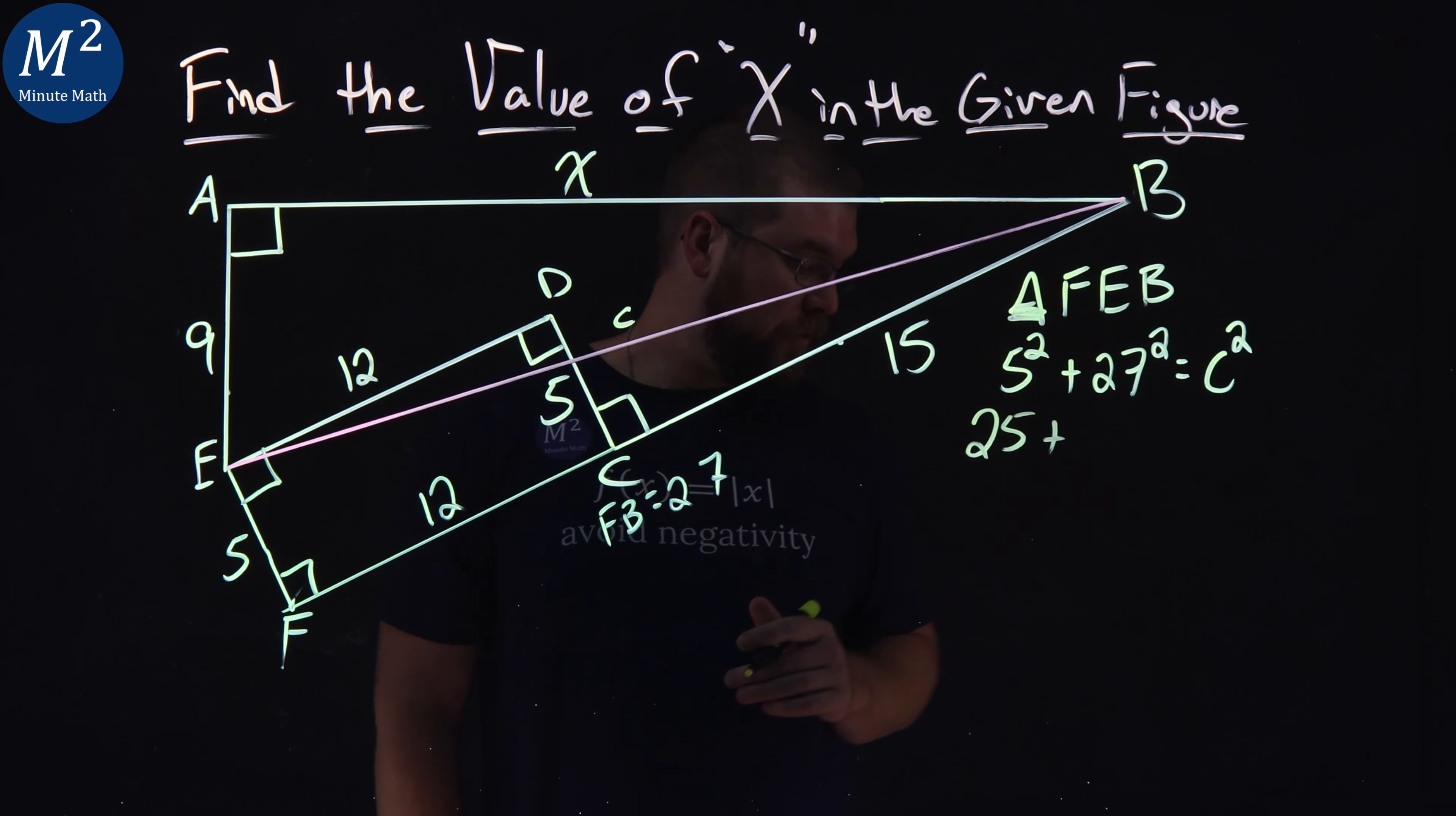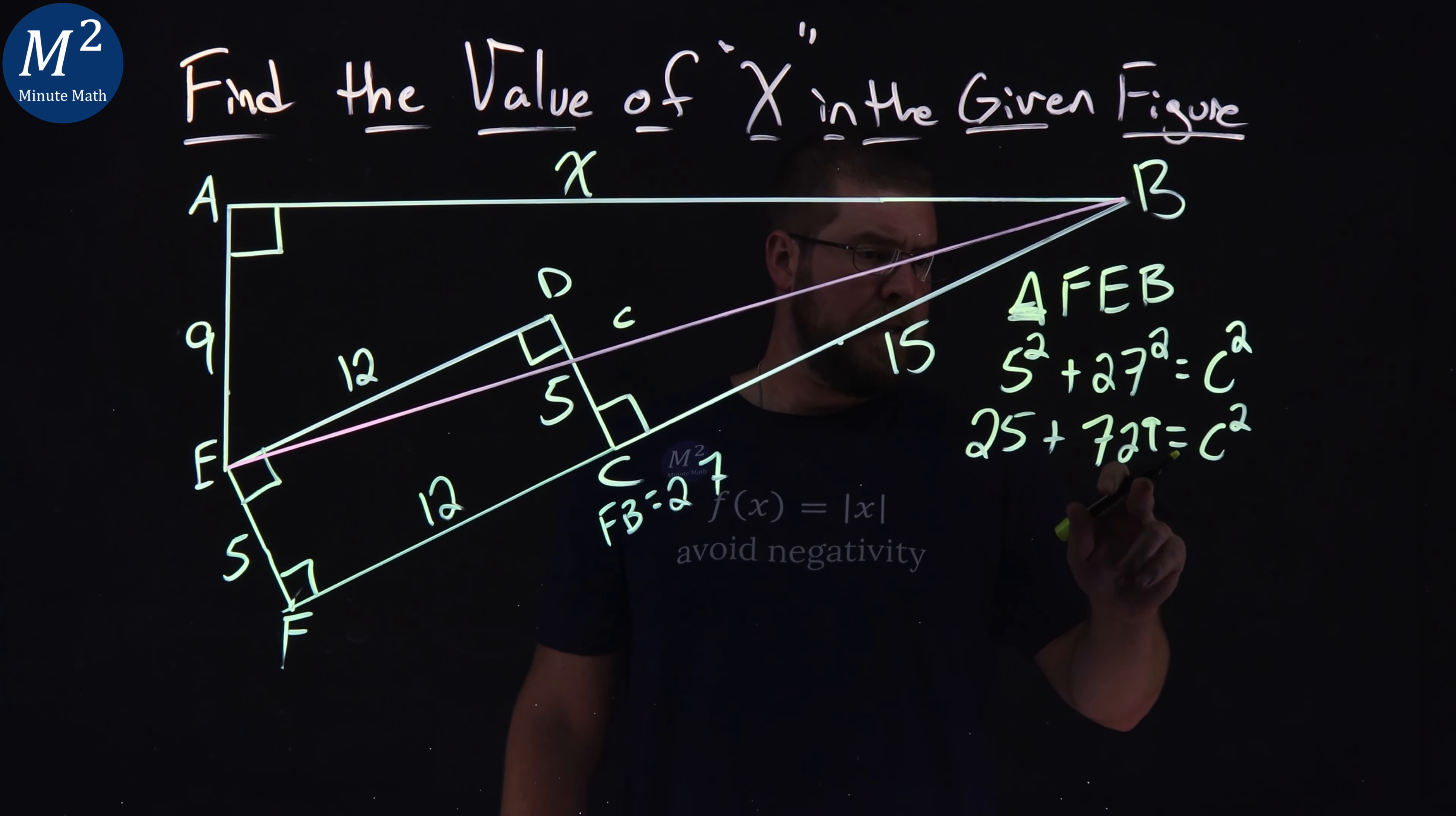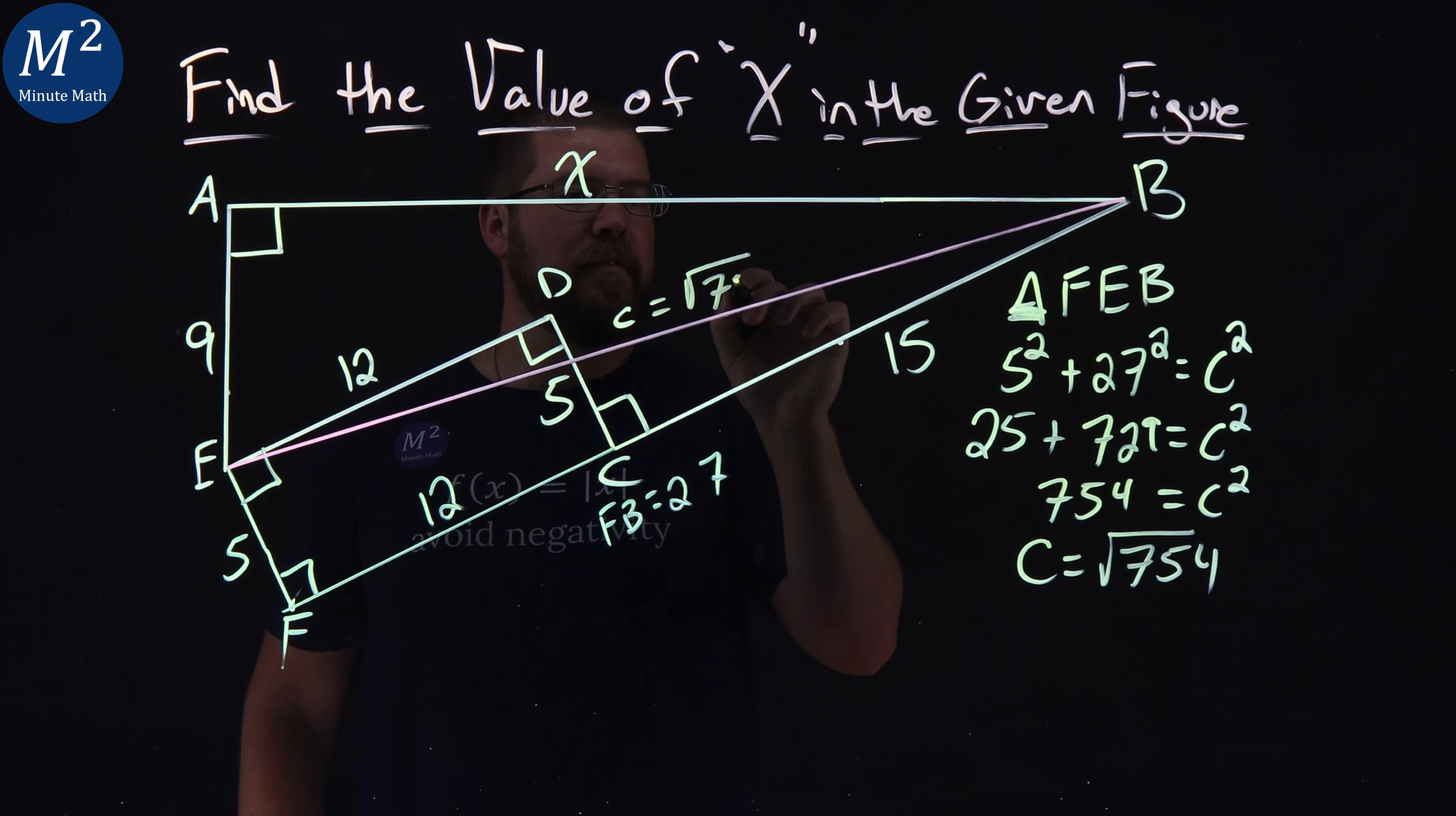We want to solve for C. 5 squared is 25, plus 27 squared, don't have that memorized, looking at my notes, 729. Equals C squared. We got 25 and 729, that's 754, equals C squared. From there, get C by itself. C equals the square root of 754. Don't simplify that because we're going to use that value in a second.